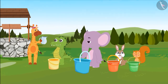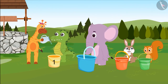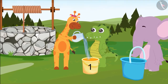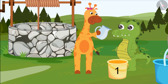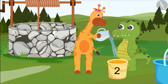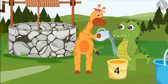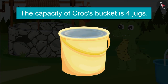Gaffee again filled the jug — one, two, three, four. That is, the capacity of Croke's bucket is four jugs.